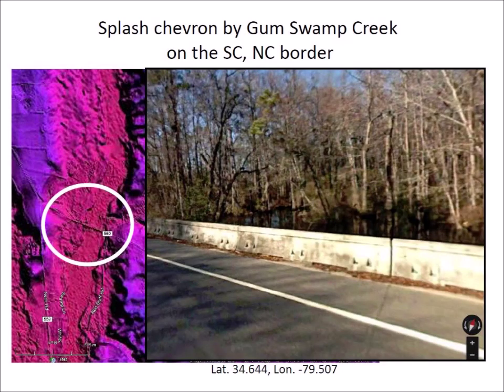I was intrigued by the name Gum Swamp Creek, so I used the street view of Google Maps to look at the bridge over the creek. Sure enough, it is a swampy area with standing water. Impacts by glacier ice projectiles with energies of 13 kilotons to 3 megatons of TNT on swampy ground would surely have ejected the large quantity of sandy soil that, carried by a strong westerly wind, would have created a splash chevron on the east side of the creek.